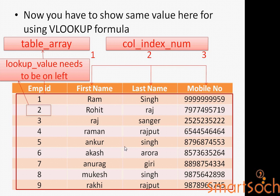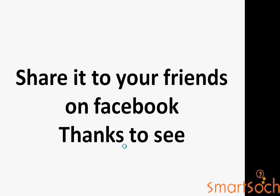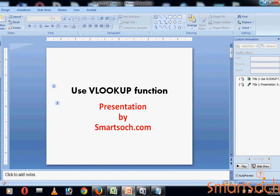What the VLOOKUP function is telling you — now you understand what is the main use of VLOOKUP function in Microsoft Excel. This is a good function for finding the same value from one table to another table. Share it with your friends if you like — you can share with friends on Facebook. Thank you for watching. My well-known VLOOKUP function.